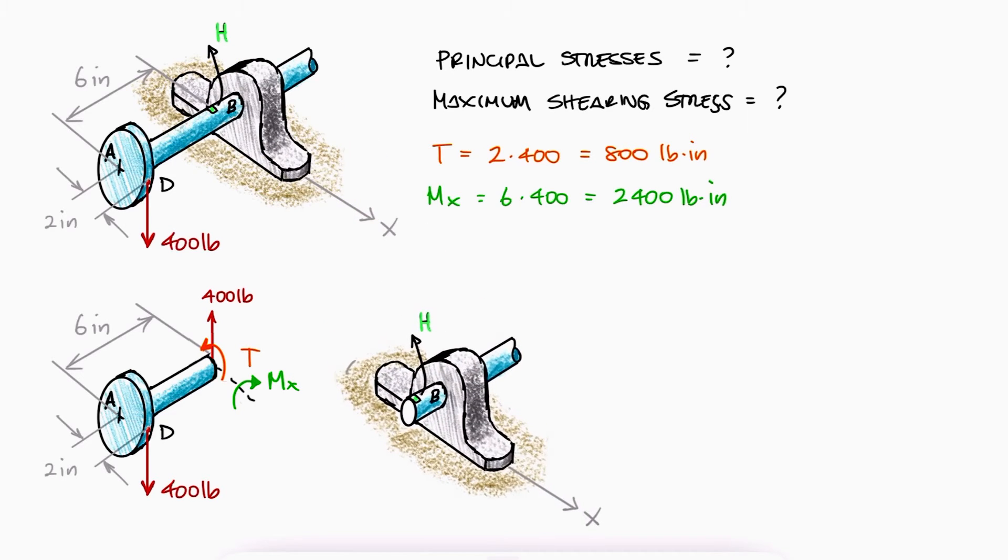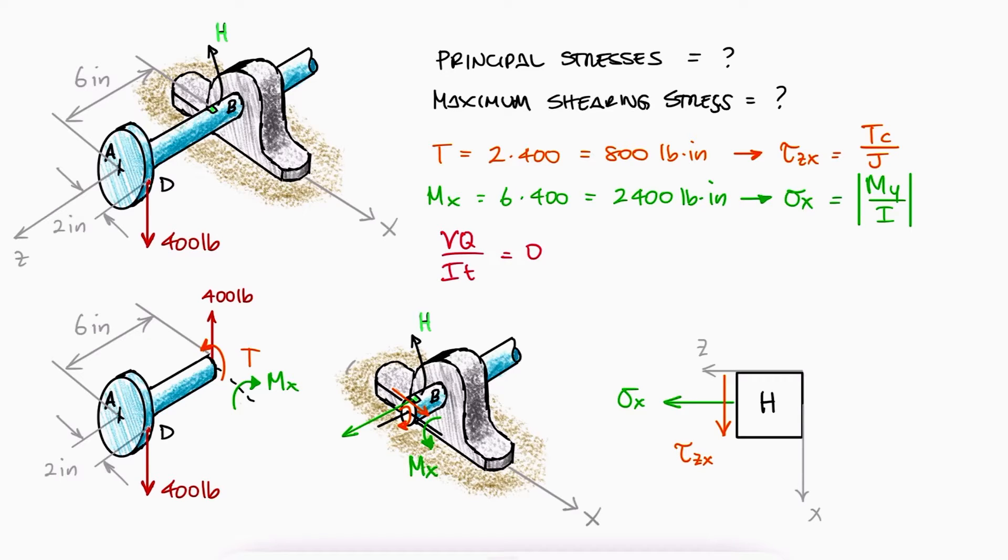Element H is therefore subjected to a tensile normal stress due to the bending moment M sub x, a shearing stress due to the torsion of the torque T, and no transverse shear since at location H, the shaded area above it required to calculate Q is zero.